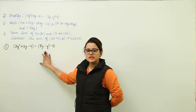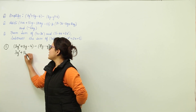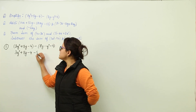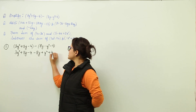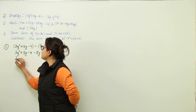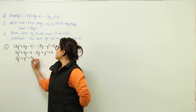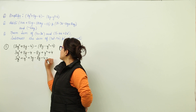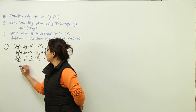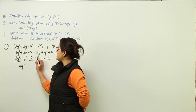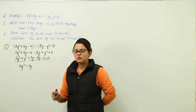Now we will open the brackets: 3y squared plus 5y minus 4, minus 8y, and applying the negative sign gives plus y squared plus 4. Grouping like terms together we get 3y squared plus y squared, plus 5y minus 8y, minus 4 plus 4. Solving these gives 4y squared minus 3y, and the constants cancel to zero.